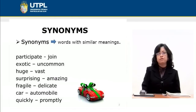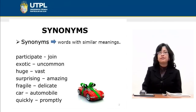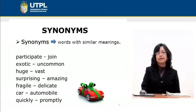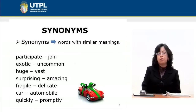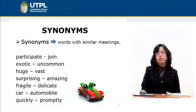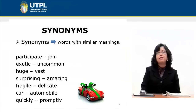We can have, as in the examples, verbs as in participate and join. We have adjectives as in surprising and amazing, fragile and delicate, exotic and uncommon. Most of the words have synonyms. In nouns we have car and automobile, and we also have examples in adverbs — in this case, quickly and promptly.